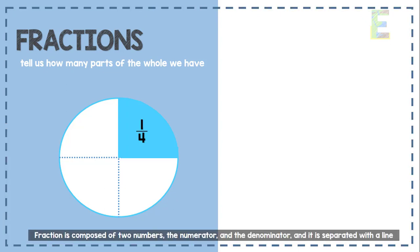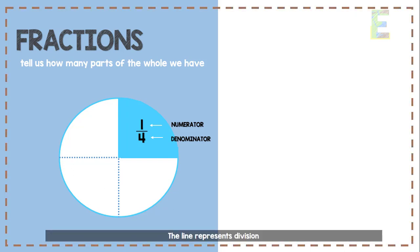Fraction is composed of two numbers, the numerator and the denominator, and it is separated with a line. The line represents division.